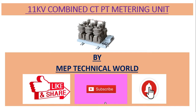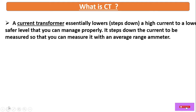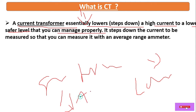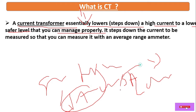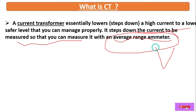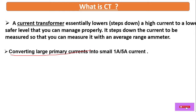So what is CT? CT stands for Current Transformer. A current transformer essentially lowers or steps down a high current to a lower, safer level that you can manage properly. Its function is to step down higher currents to a lower range — up to one ampere or five ampere. This is the ratio of CT on the secondary side, stepping down the current so that you can measure it with an average range meter.